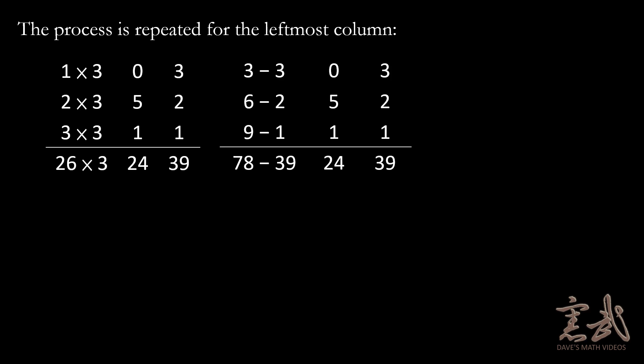The process would then be repeated for the leftmost column. Again, because there are three sheaves of top grade grain, you multiply every number in the left-hand column by three. Next, because three goes into three exactly once, you simply subtract every number in the right-hand column from every number in the left-hand column, which gives us zero, four, eight, and thirty-nine in the left-hand column.